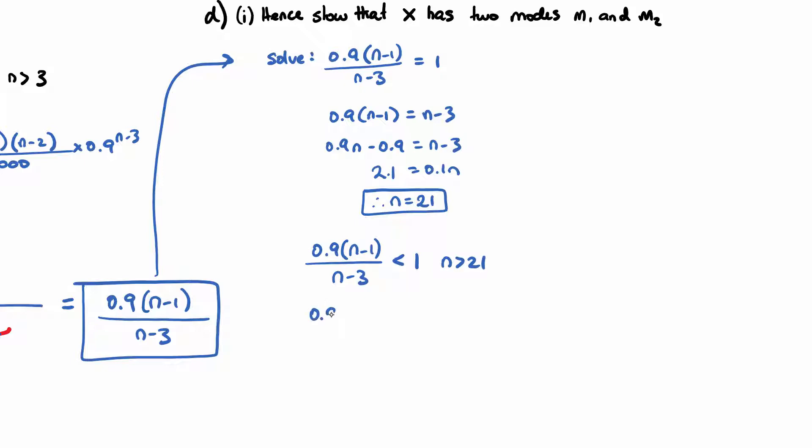And if we use the other possibility where this is greater than 1, which would mean the probability of such value would be greater than the one before it, this is when N is less than 21.